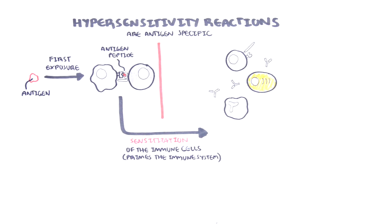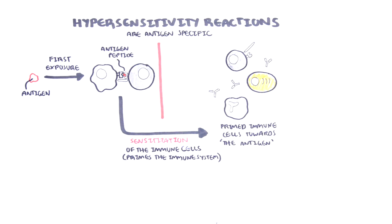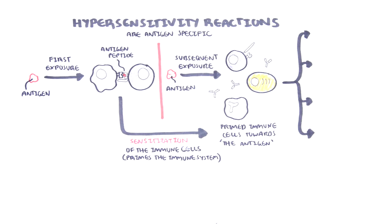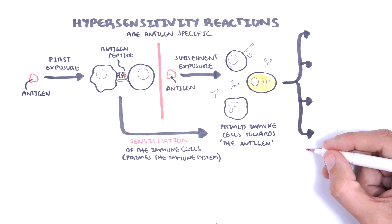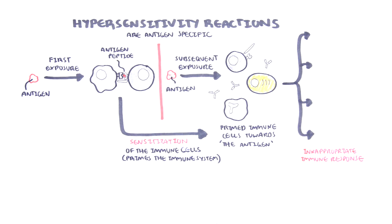So when the next time the antigen comes along, the primed immune system — including the T cells, antibodies, and neutrophils — can mount an exaggerated and inappropriate immune response, also known as a hypersensitivity reaction.